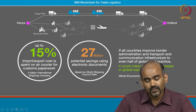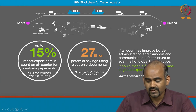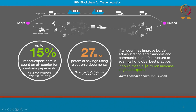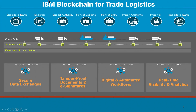According to the World Economic Forum, back in 2013 — so the numbers are probably even higher now — if all countries improved their border administration and the transport and paperwork even to half of what is considered global best practice, not even reaching best practice, just half of it, you could still save about 100 trillion dollars a year. That is the enormity of this industry and how it is fundamental for every other industry to carry on.